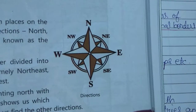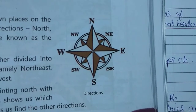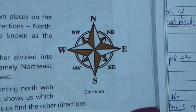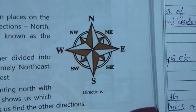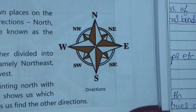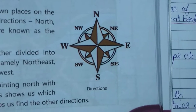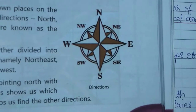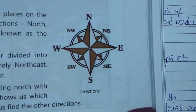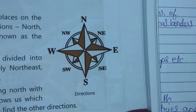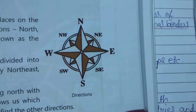You can see here the four cardinal directions — north, south, east, and west — and they are further divided into the intermediate directions: northeast, northwest, southeast, and southwest.